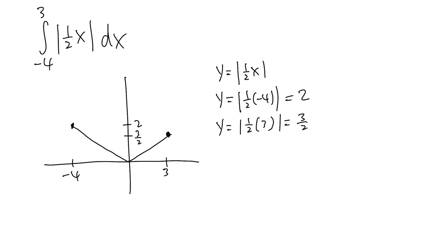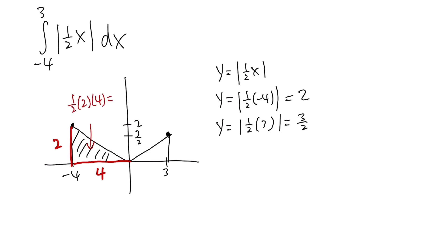So this time we have two triangles, and we want to find the area from negative 4 to 3. For the first triangle, the base is from negative 4 to 0, which is 4, and the height is 2. The area is 1/2 times base times height, which is 1/2 times 4 times 2, equals 4.